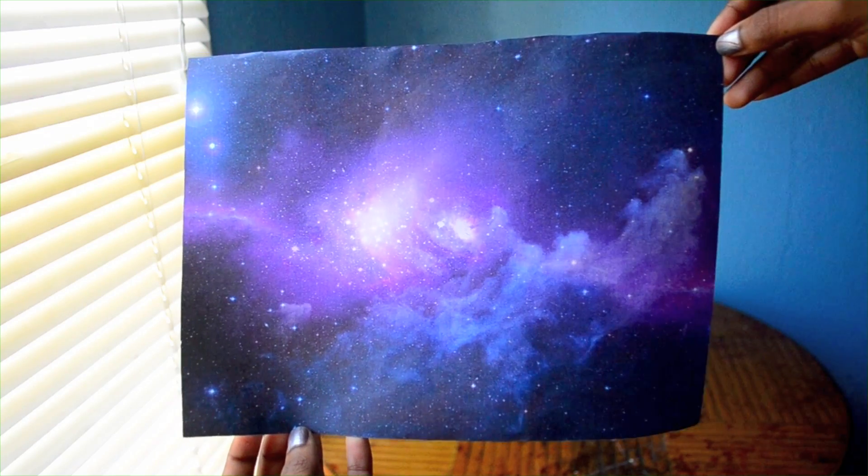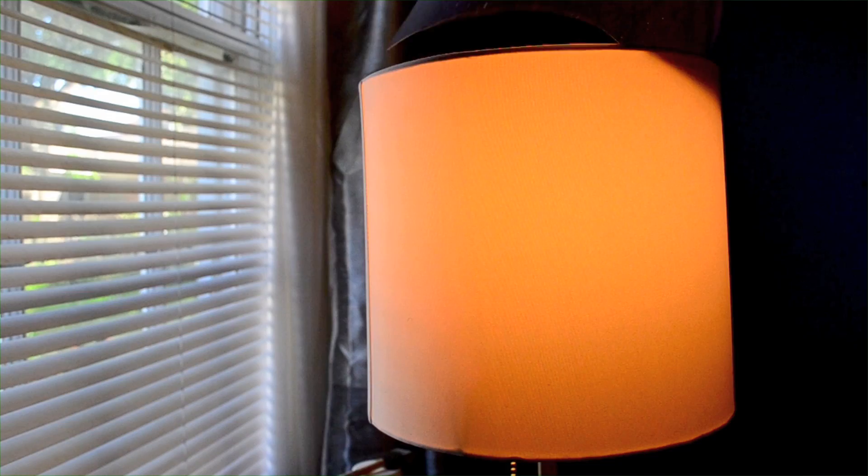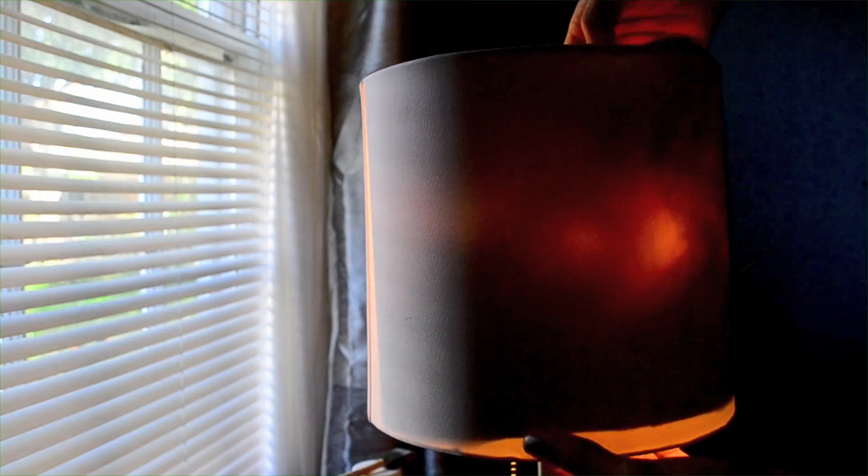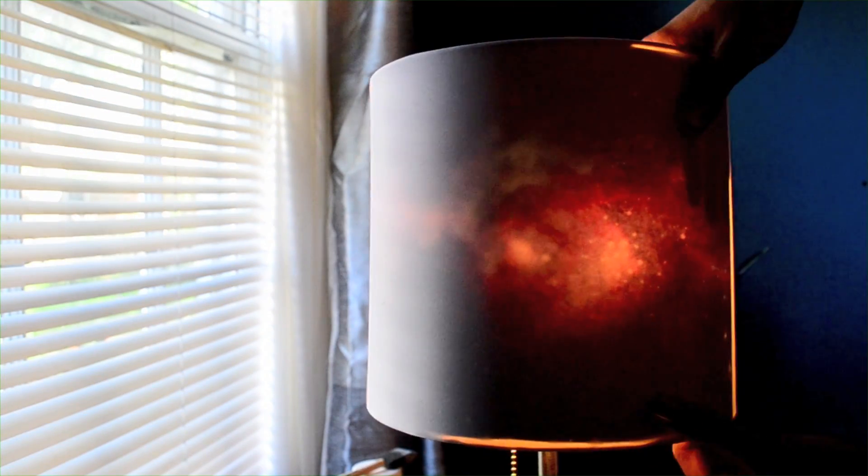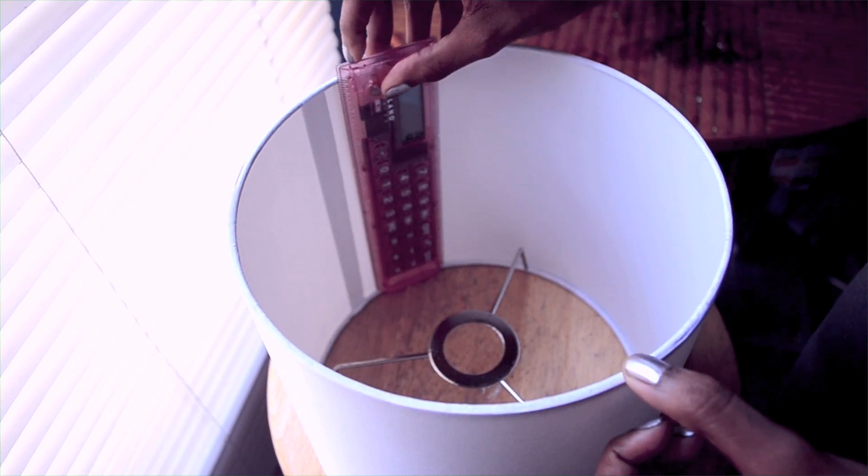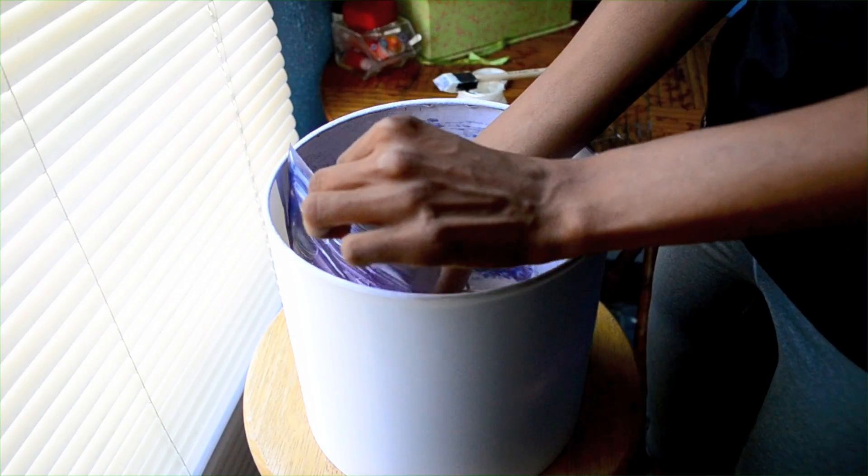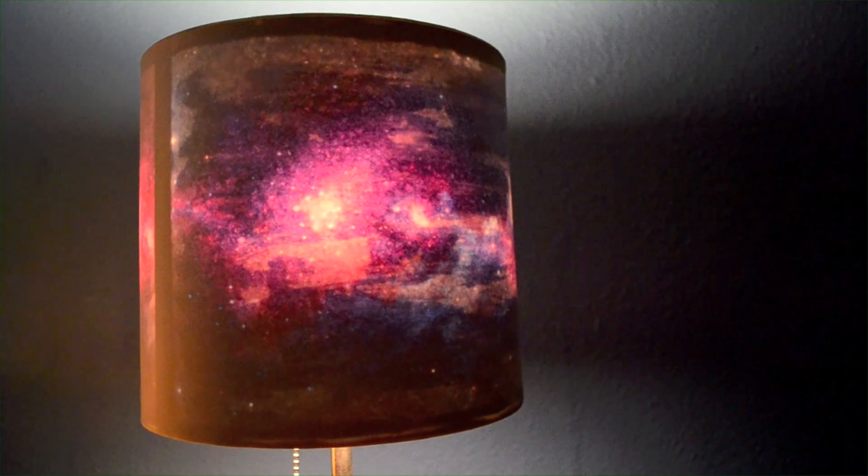Essentially all I did was print out a galaxy design and glue it to the inside of a lamp so that when the lamp is turned on, the galaxy print shows through. This particular DIY involved a lot of trial and error because there was no set of instructions to follow. I tried a lot of different methods and failed a lot, but I ultimately came up with something that worked.